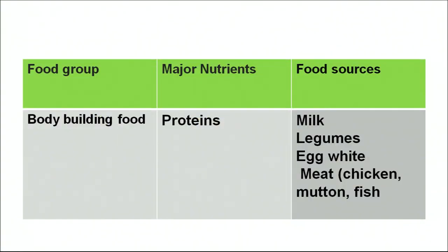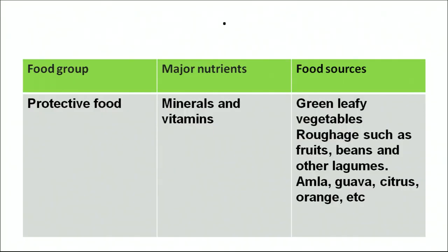Another category of the food group is body-building foods. The major nutrients of body-building foods are proteins. We can get proteins from milk, legumes, egg white, meat, chicken and fish. The next category is protective food — the major nutrients are minerals and vitamins. Food sources are green leafy vegetables, raw fruits such as beans, amla, guava, and all fruits and vegetables.